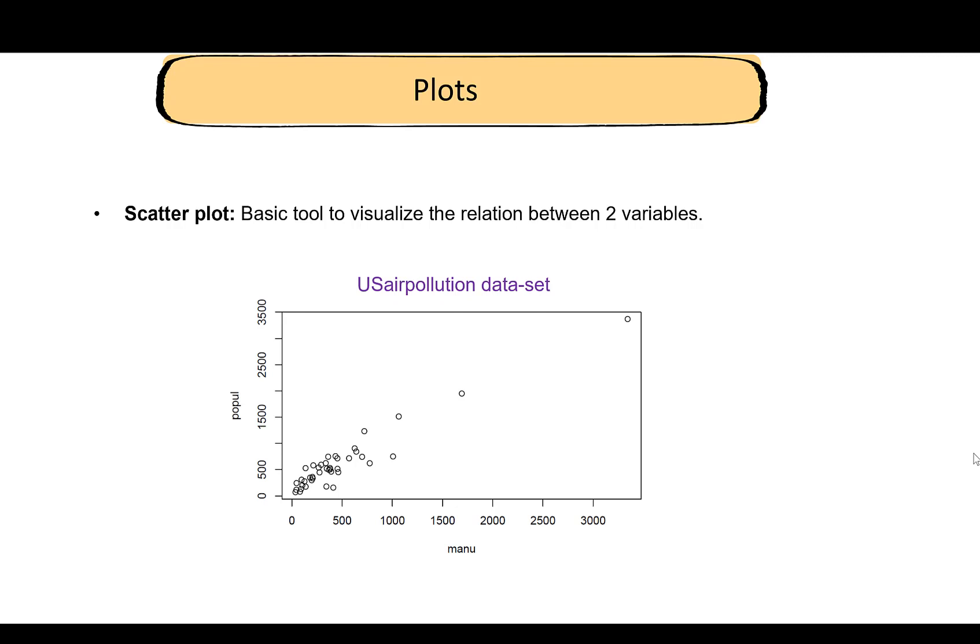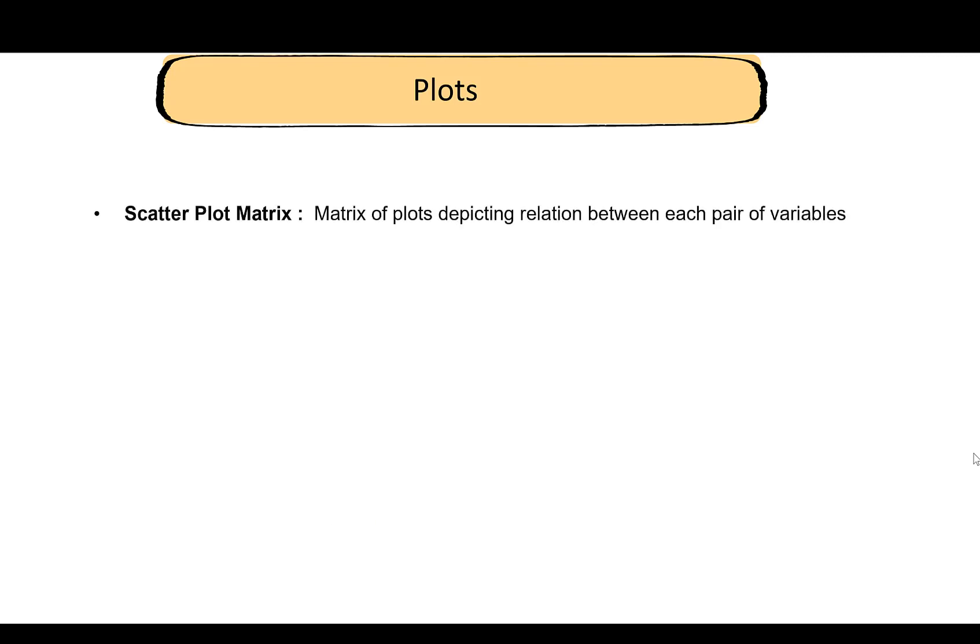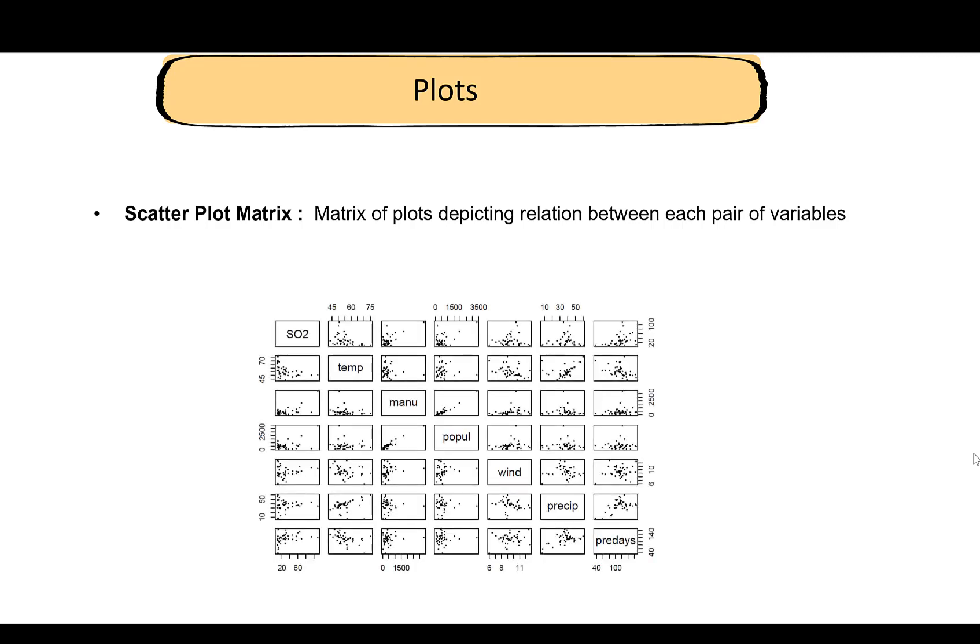How can we visualize the relation between each pair of variables at the same time? That brings us to the scatter plot matrix. This is a matrix of plots, and each plot depicts the relation between a pair of variables. This is a relationship between sulfur dioxide levels and temperature. This would be the relation between the manufacturing units and the population, and so on.